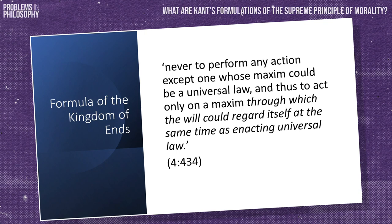Finally, in thinking of ourselves as legislating our maxims to other rational beings in this way, and asking if as rational beings they could adopt such maxims as their own, we are in effect thinking of ourselves and others as a community of beings who are treated as ends in themselves, or what Kant calls a kingdom of ends, giving rise to a modification of the formula of autonomy known as the formula of the kingdom of ends: never to perform any action except one whose maxim could be a universal law, and thus to act only on a maxim through which the will could regard itself at the same time as enacting universal law. By treating one's fellow moral citizens in this way, Kant argues, one treats them as possessing not mere price, but dignity — the dignity appropriate to them as beings with absolute value.